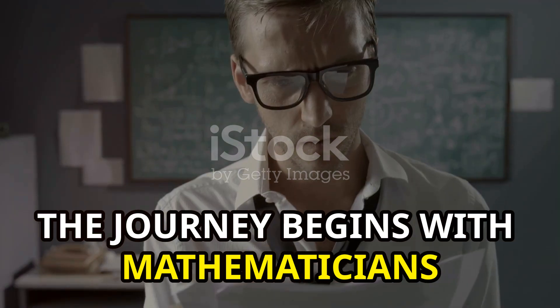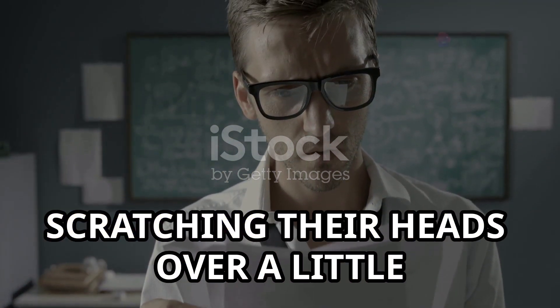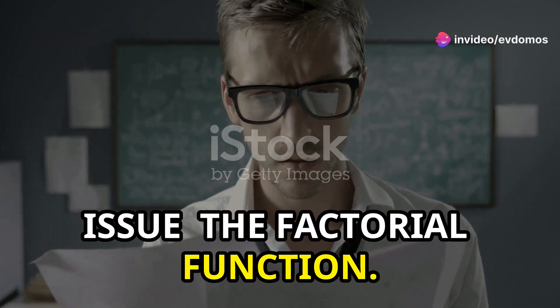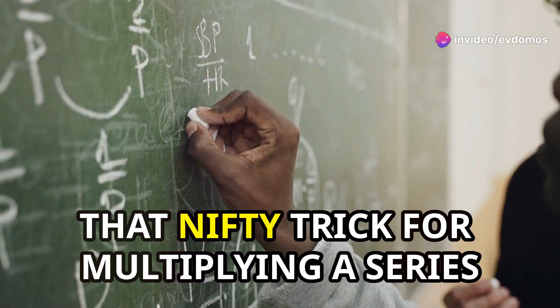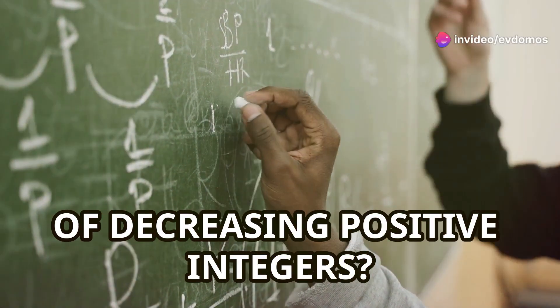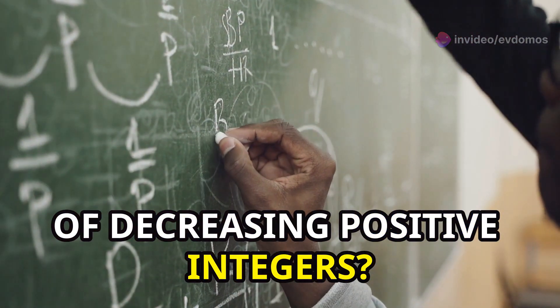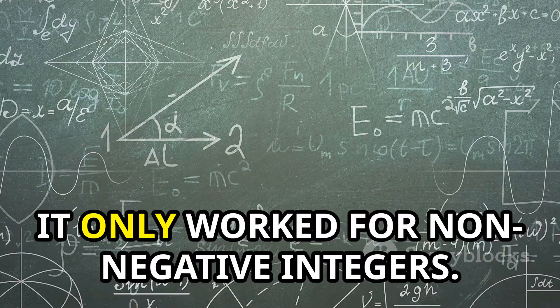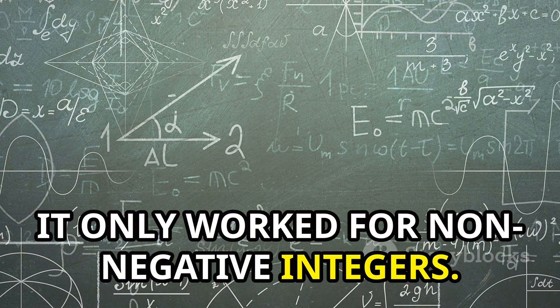The journey begins with mathematicians scratching their heads over a little issue, the factorial function. You know, that nifty trick for multiplying a series of decreasing positive integers. But there was a catch. It only worked for non-negative integers.